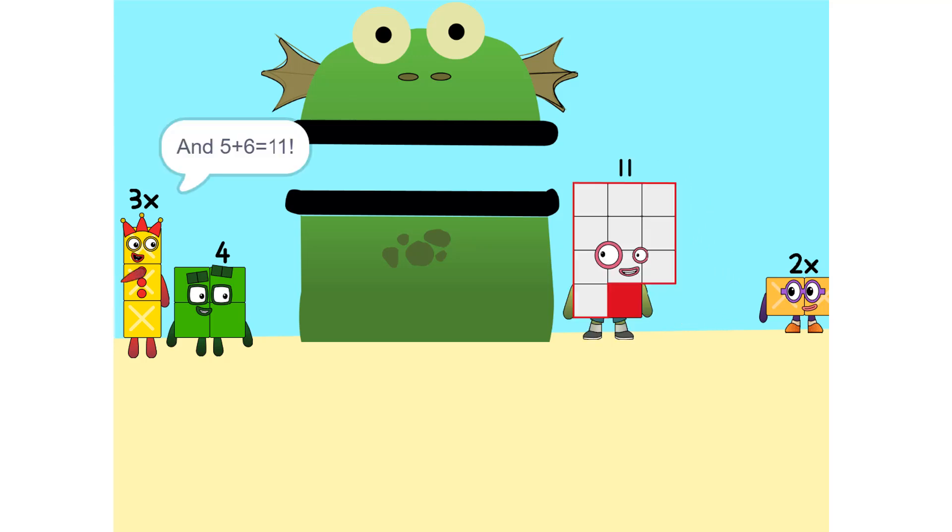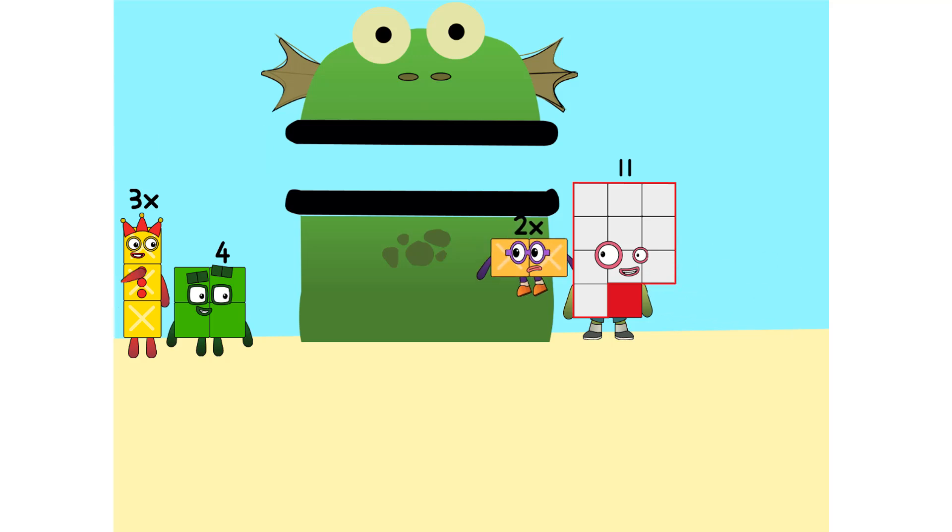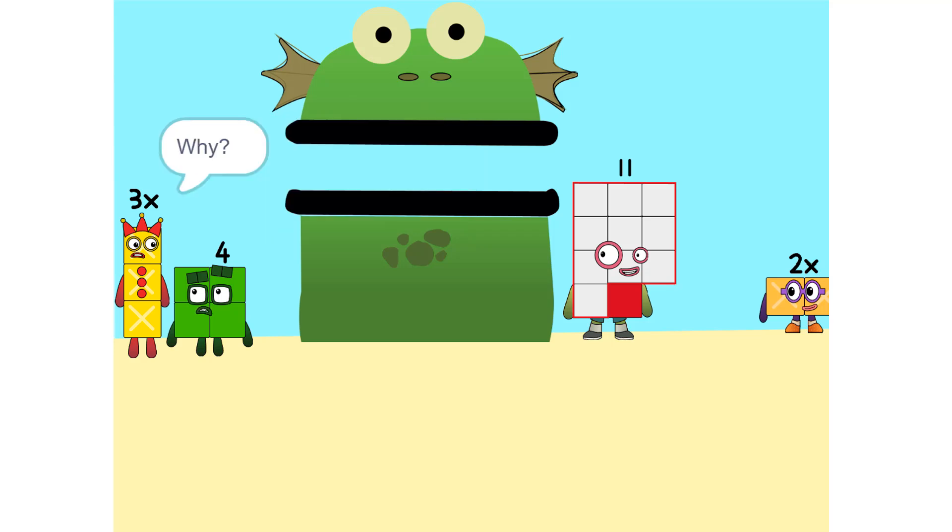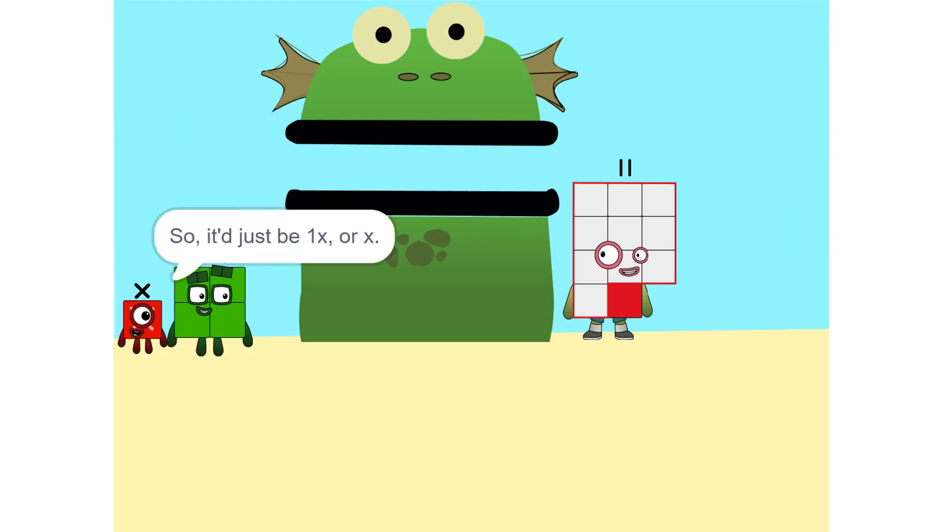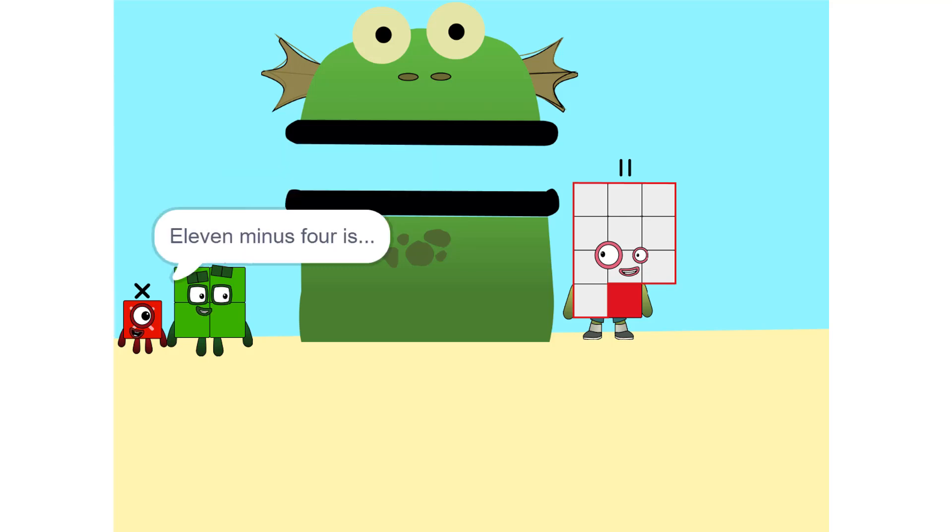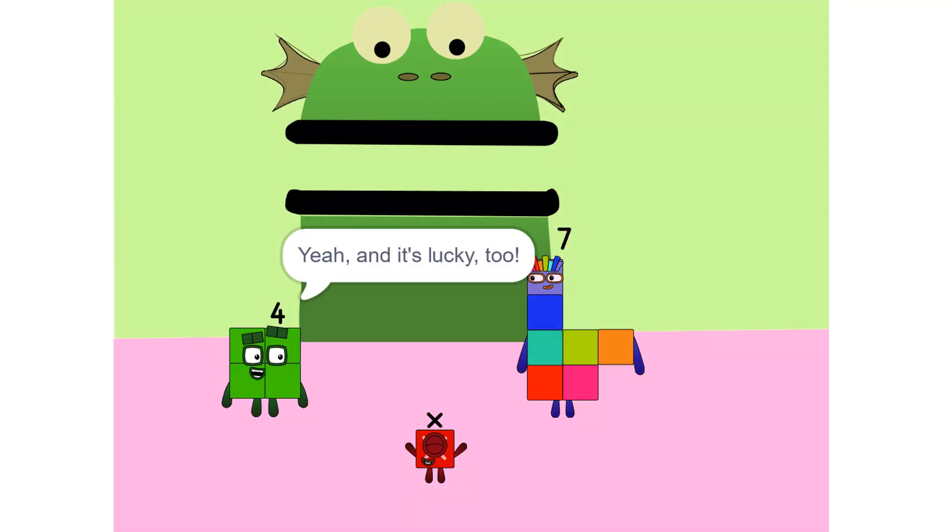Now we have to move things around. We have to move this 2x to this side. Whenever you switch sides, you have to switch signs. So if it's positive, it becomes negative and vice versa. Think of it this way: you're subtracting 2x from each side. Maybe just 1x or x. Correct. Now do the same with the 6. 11 minus 6 is 5. Wait, 7. So now what do I do? What's there left to do? Oh, x equals 7. So I'm 7. Yeah.